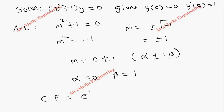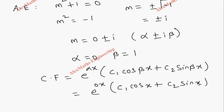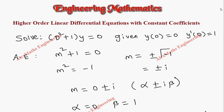The complementary function by formula is e^(αx) · (c1·cos(βx) + c2·sin(βx)). Replacing the values, we get e^(0·x) · (c1·cos(x) + c2·sin(x)), which simplifies to c1·cos(x) + c2·sin(x). On the other side of the equation we have 0, so there is no particular integral.